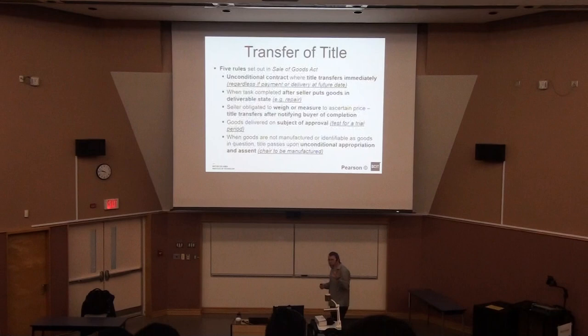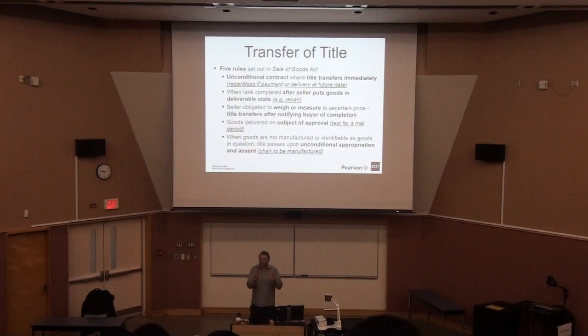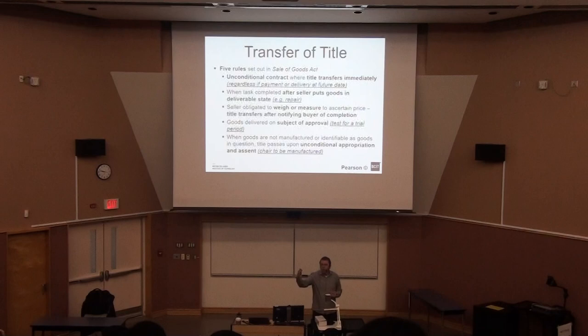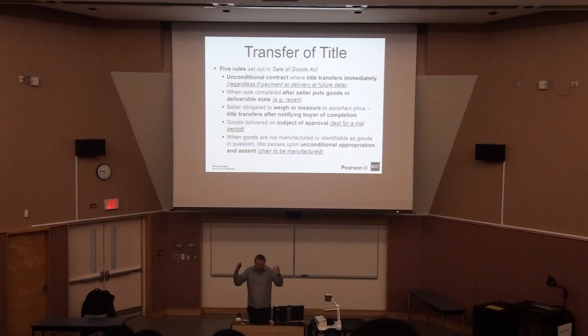Continuing with the Sale of Goods Act, there are five rules that are important to know. They apply to different types of transactions. The first rule is the unconditional contract: title transfers immediately, regardless of the date of payment or delivery. This is the example when you go to IKEA, Best Buy, or any store and buy goods. You see the goods and you buy them — that's an unconditional sale.